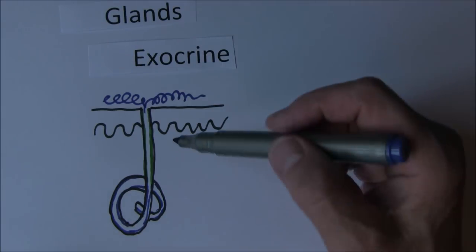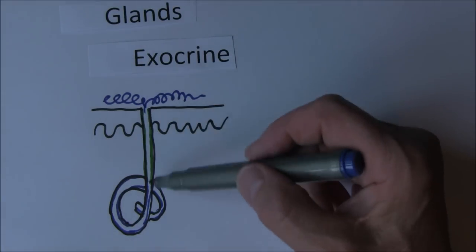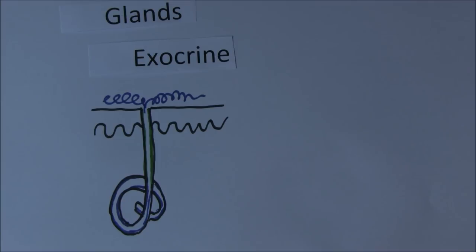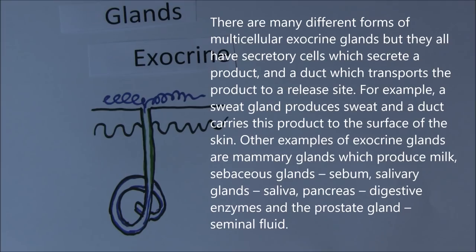Quite a few glands in the gastrointestinal tract work similarly, such as salivary glands or gastric glands in the stomach producing gastric juices. The pancreas itself is also an exocrine gland. Lacrimal glands produce tears, sebaceous glands produce sebum, and mammary glands produce milk — just to give a few examples.